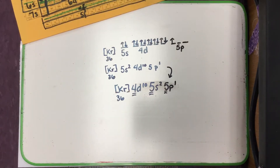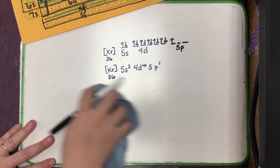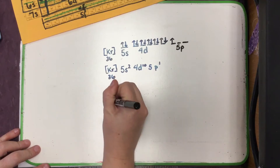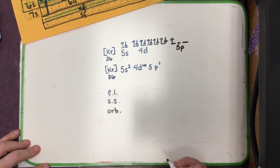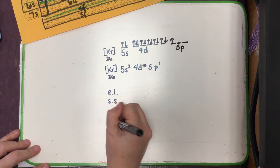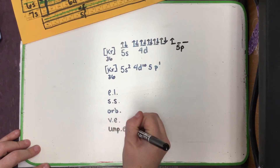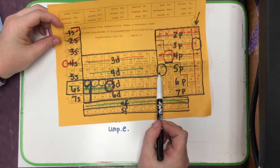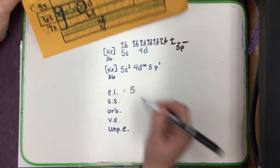Just like in our last lesson, once you have these shorthands written out, you still need to figure out energy levels, subshells, and orbitals. Today we're also going to add in valence electrons and unpaired electrons. For energy level, if we're looking at indium, we can simply look and say which floor it's on — it's on the fifth floor, so that's five occupied energy levels. We can also just look for the biggest principal quantum number we wrote.